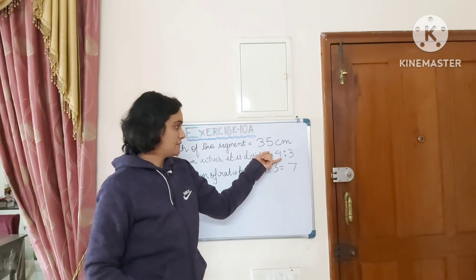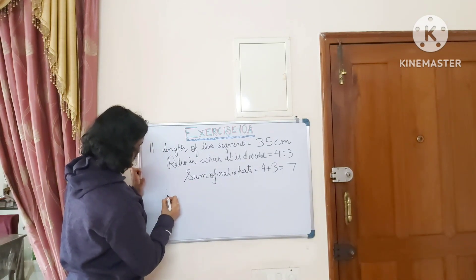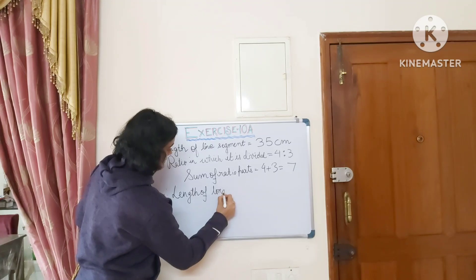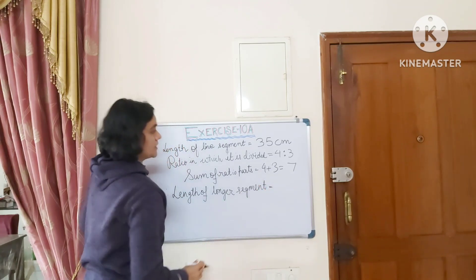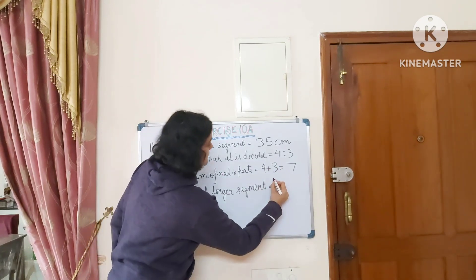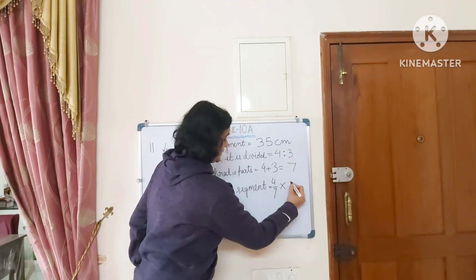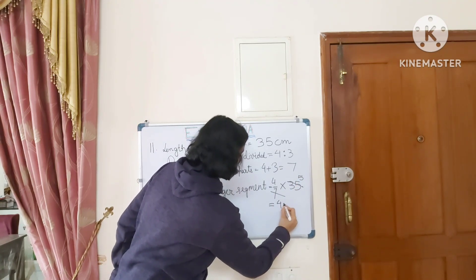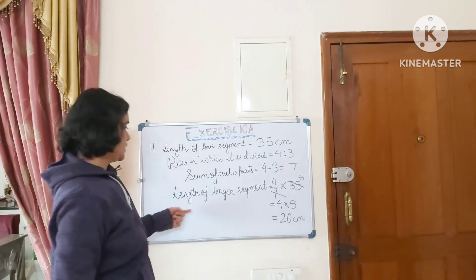The longer segment corresponds to the ratio part 4. So the length of the longer segment is 4 out of 7 of the total length, which is 4 by 7 of 35 centimeters. Multiplying: 4 into 5 equals 20 centimeters. That is the length of the longer segment.